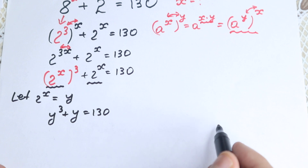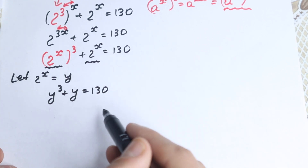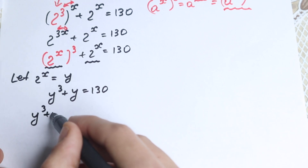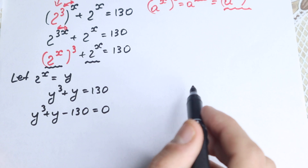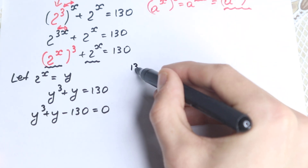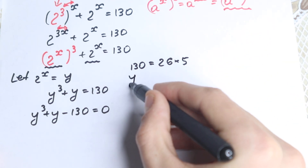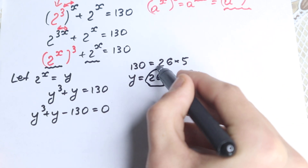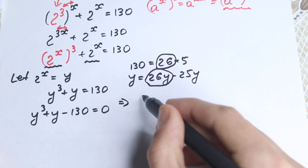There are a lot of approaches to solve this cubic equation, but in this video I'm going to show you a really good and interesting approach. First, we need to get the cubic equation in standard form. We bring the constant from the right to the left: y cubed plus y minus 130 equals 0. Now, 130 can be written as 26 times 5, and y can be written as 26y minus 25y — I want to find this common 26 in both terms.